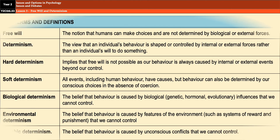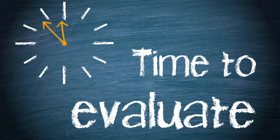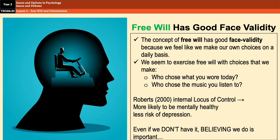I hope all of that has made sense. On the screen you can see a quick reminder of the keywords and what they mean. We're now going to move on to the second half of the video, which is the evaluation points. I've got five evaluation points for you — that's slightly more than usual, but there are quite a few to pick from. You don't have to know them all; you can pick and choose which ones you want to learn and use in an essay. The first argument is for the case of free will: it has good face validity.